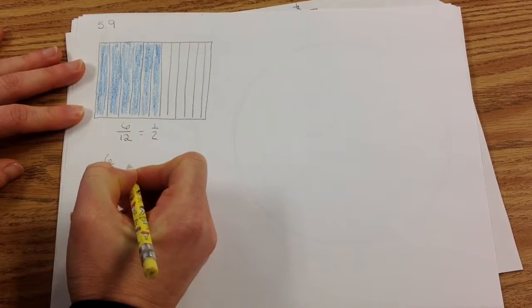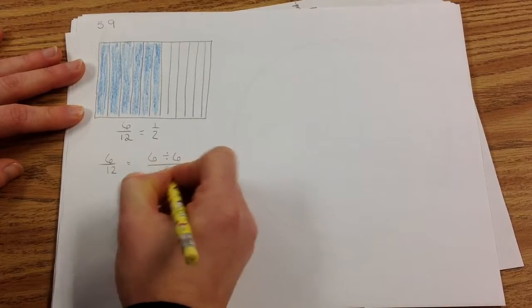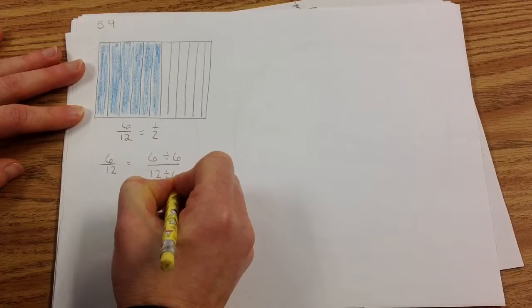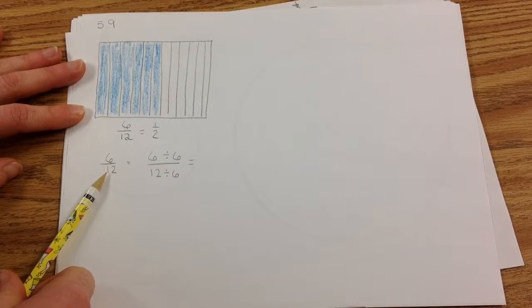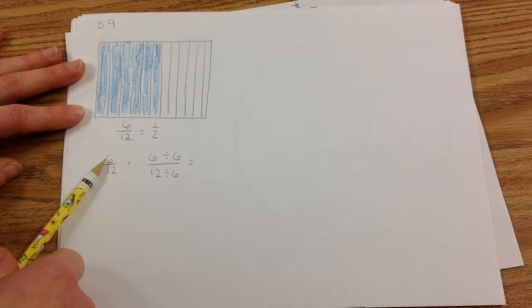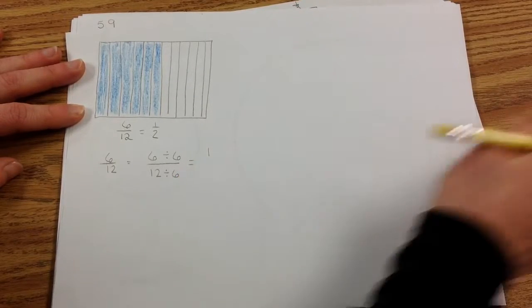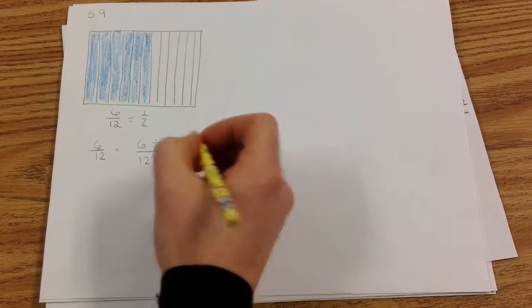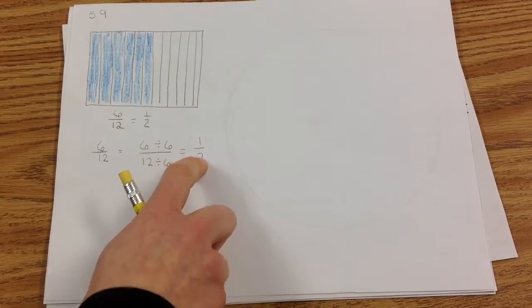So here's what we're going to do. We're actually going to prove it. We're going to say 6 twelfths equals 6 divided by 6 and 12 divided by 6. The reason we're doing that is because 6 is a factor of 12. So this is called finding the greatest common factor. And 6 is obviously a factor of itself. And 6 is obviously a factor of 12. 6 divided by 6 is 1. 12 divided by 6 is 2. So we have just proven that 6 twelfths is the same as 1 half.